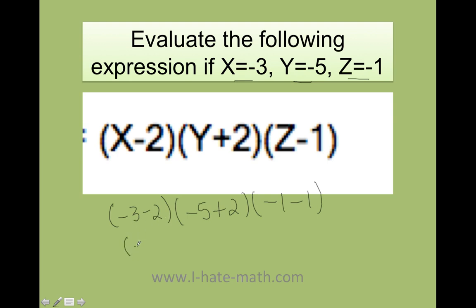Negative 3 minus 2 equals negative 5 because I'm adding. Here I'm going to subtract. Negative 5 plus 2 is going to equal negative 3. And negative 1 minus 1 is negative 2. Now, I can multiply because, see, I don't have a plus or a minus. So that's an indication that I need to multiply. Negative 5 times negative 3 is going to be positive 15. But 15 times negative 2 finally is going to be negative 30. Awesome! You're doing a great job.